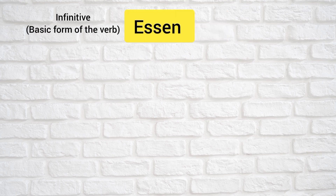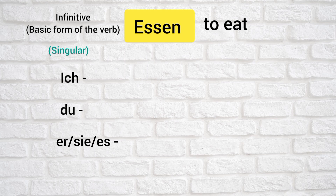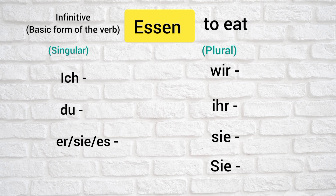Let's start with asan. Asan means to eat. We have personal pronouns for singular: ish, do, air zs, and for plural: via, air z, and z with capital S for formal z. Let's conjugate asan: ish asa, do east, air zs east, via asan.